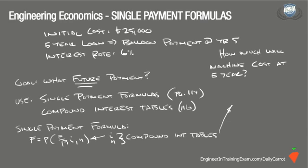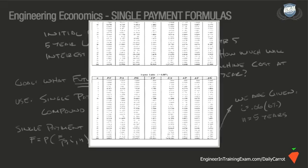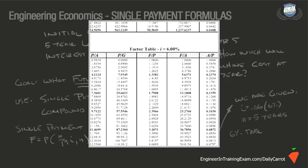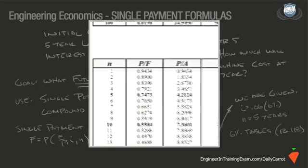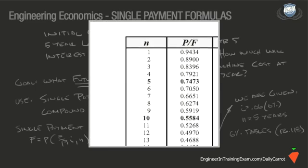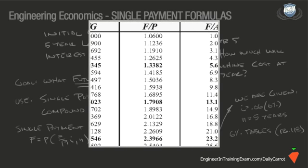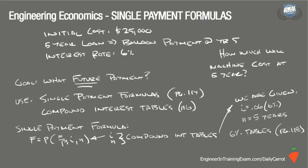In this problem we are given an interest rate of 6% or 0.06 and a period N of 5 years. Referencing the compound interest table for 6% on page 118 of the NCEES Supplied Reference Handbook, we locate the period N equal to 5, which is the far left column, and work our way horizontally to the factor F/P.